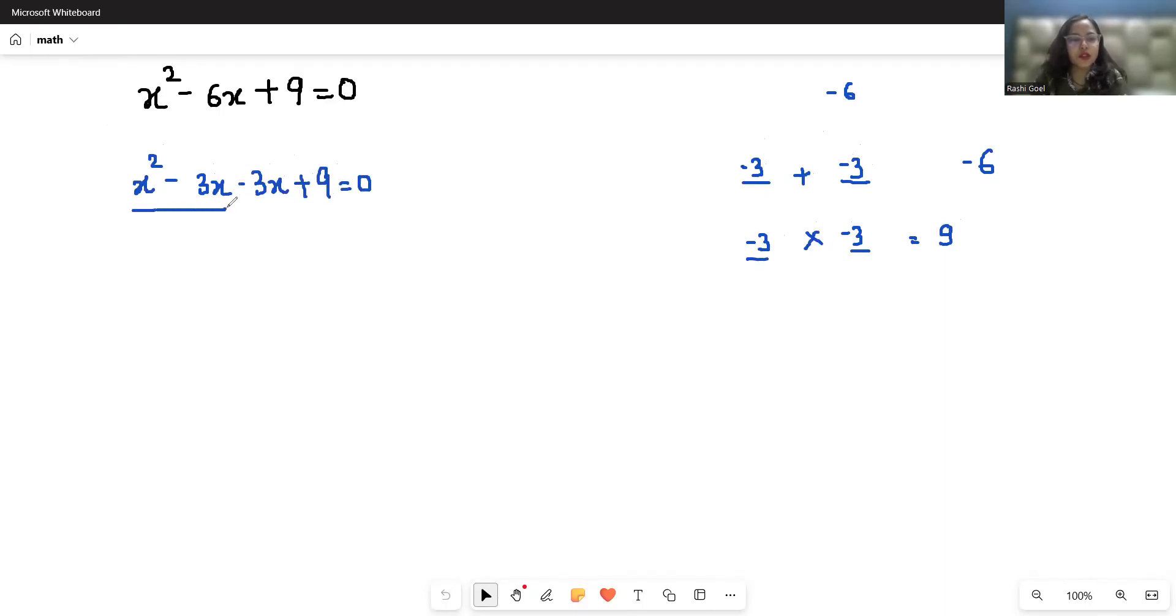Now from the first two terms, I can take x as common, so what is left is x(x - 3). And from the next two terms, if I take -3 as common, then we have to write a negative sign again because negative times negative gives positive.